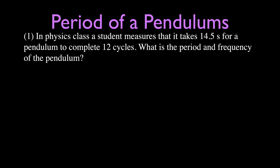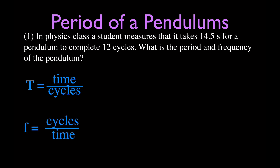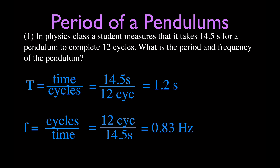Problem number 1: A student measures that it takes 14.5 seconds for a pendulum to complete 12 cycles. We want to know the period and frequency. We're not given the length, so we use the time-and-cycles equations. The period is 14.5 divided by 12, which gives us 1.2 seconds. For the frequency, 12 cycles divided by 14.5 seconds gives 0.83 hertz — less than one full cycle per second, which makes sense since the period is greater than one second.